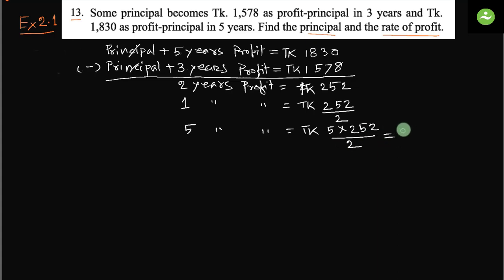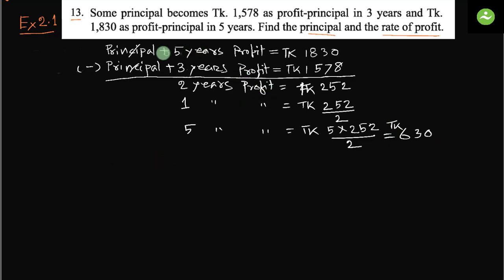Five years profit equals taka 630. Now, going back: principal plus five years profit was taka 1830, and five years profit is taka 630. So we can find the principal by deducting the five years profit.